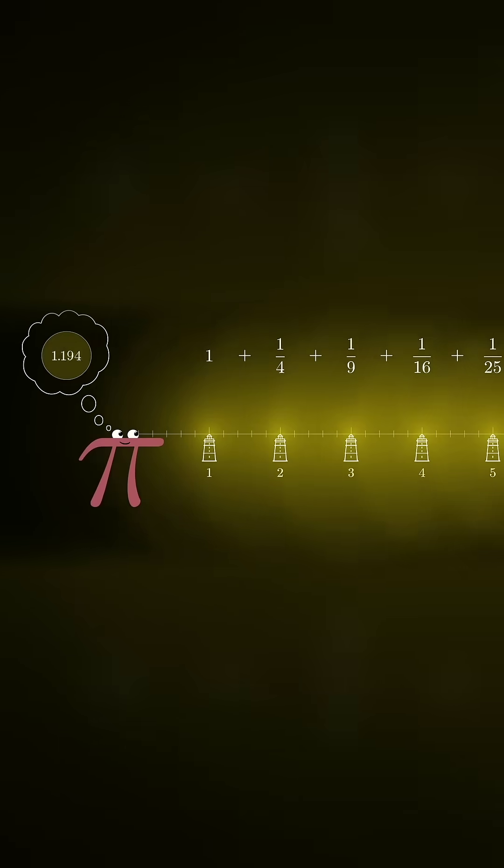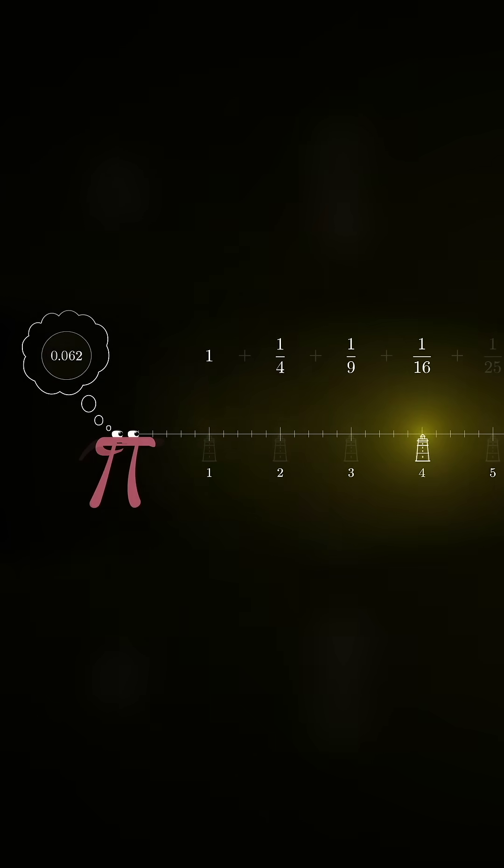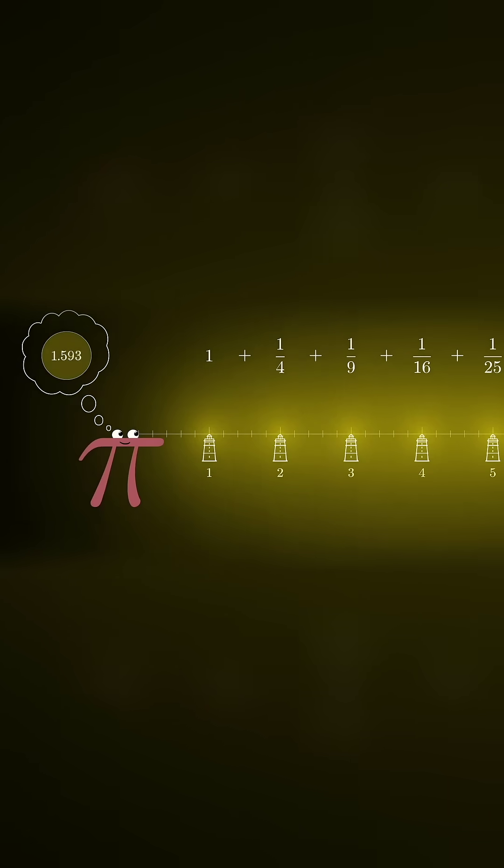Which means the total brightness from all of them together is 1 plus 1 fourth plus 1 ninth, adding on all of the reciprocals of the square numbers up to infinity.